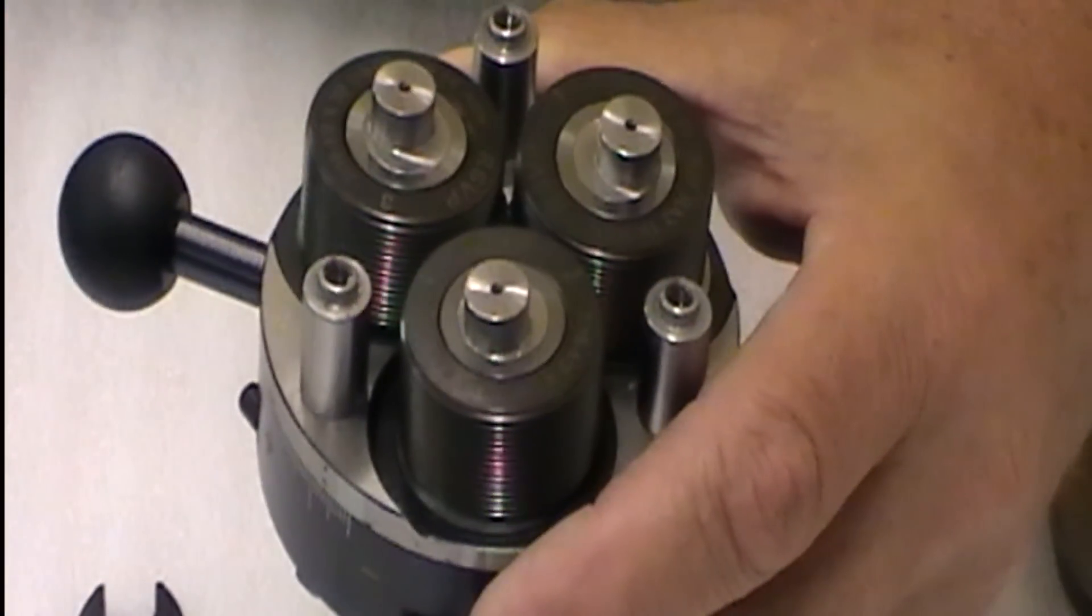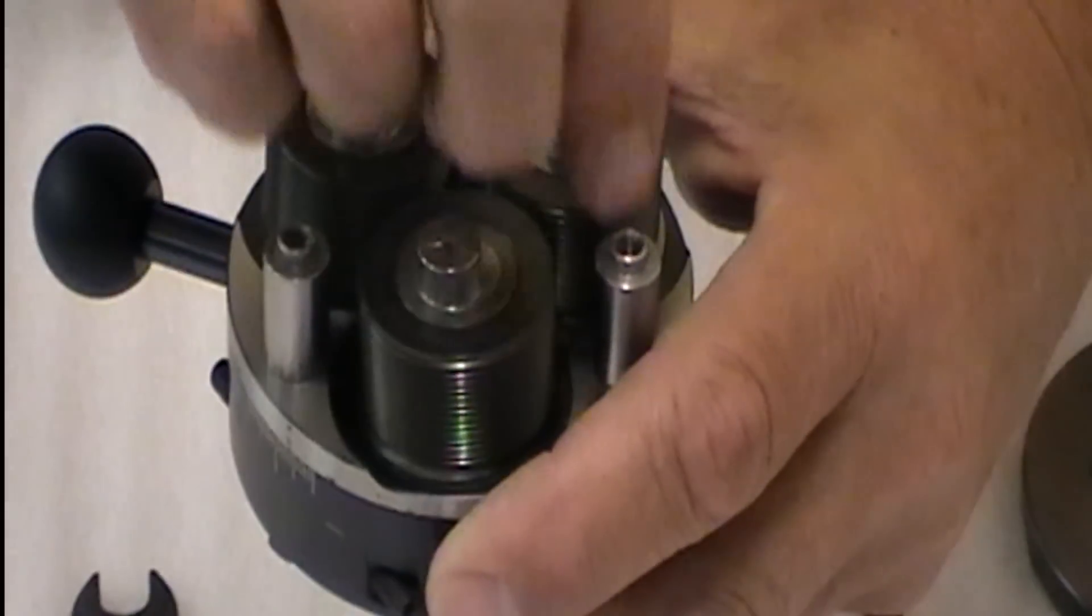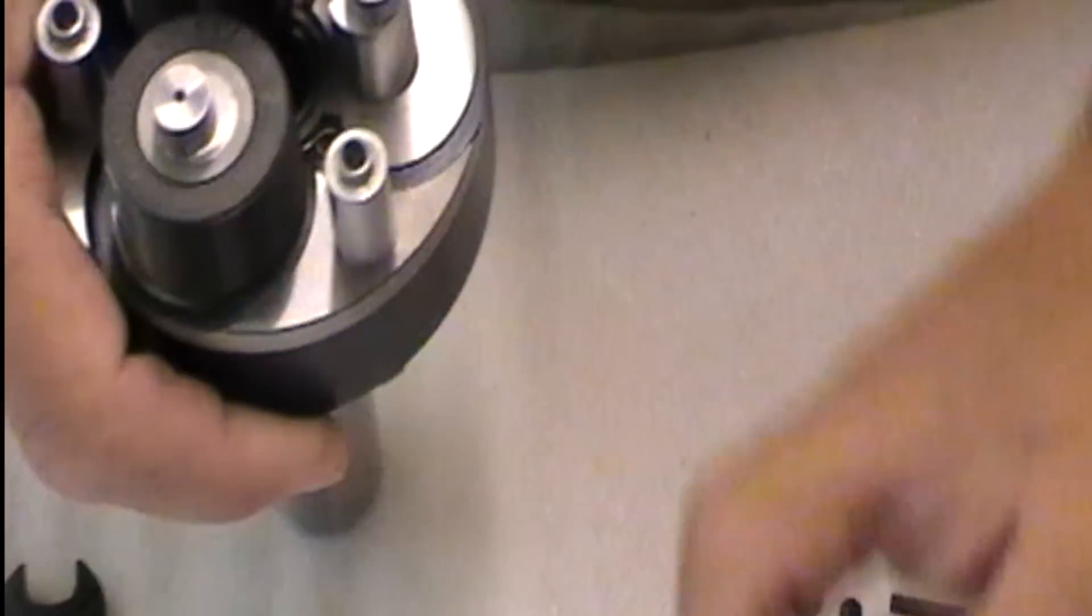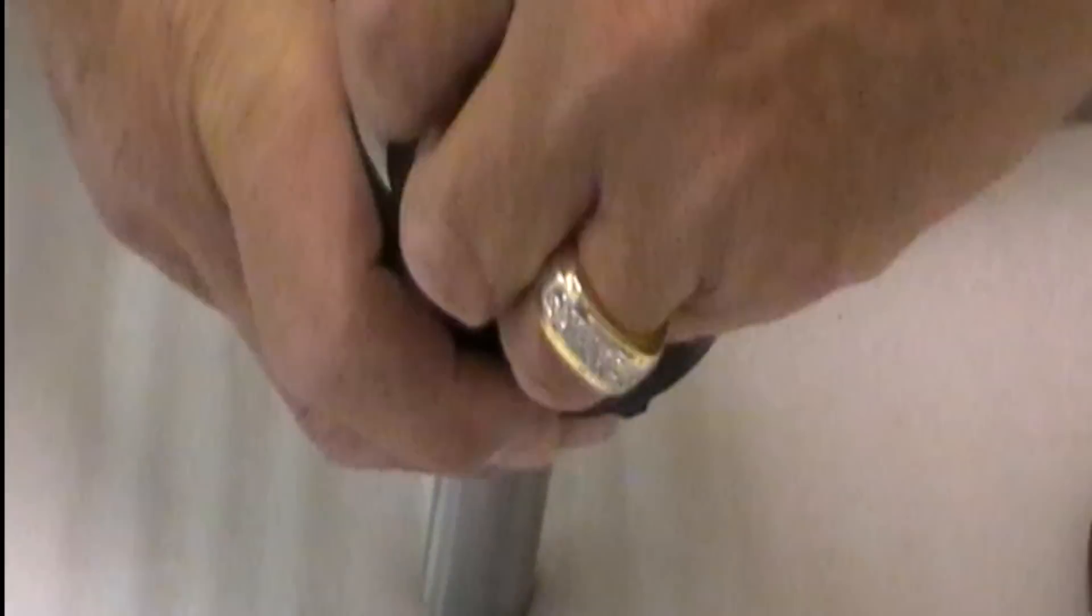When you need to change and flip your rolls, they are marked A, B, C. I'll pull them off.